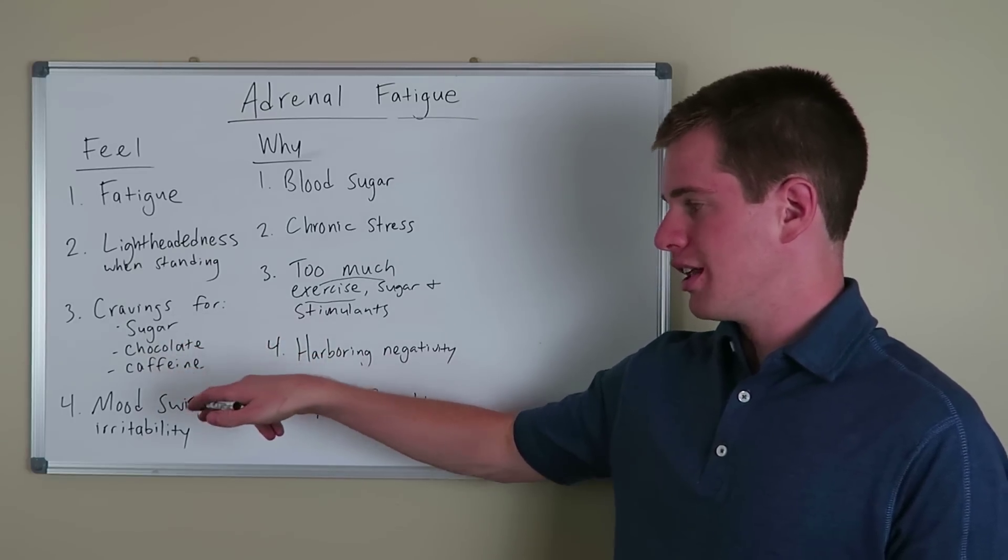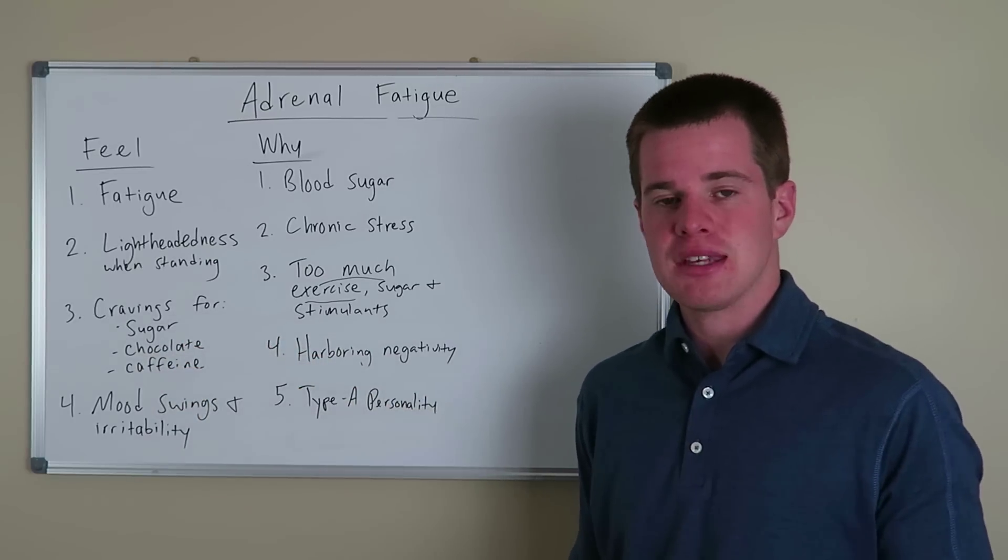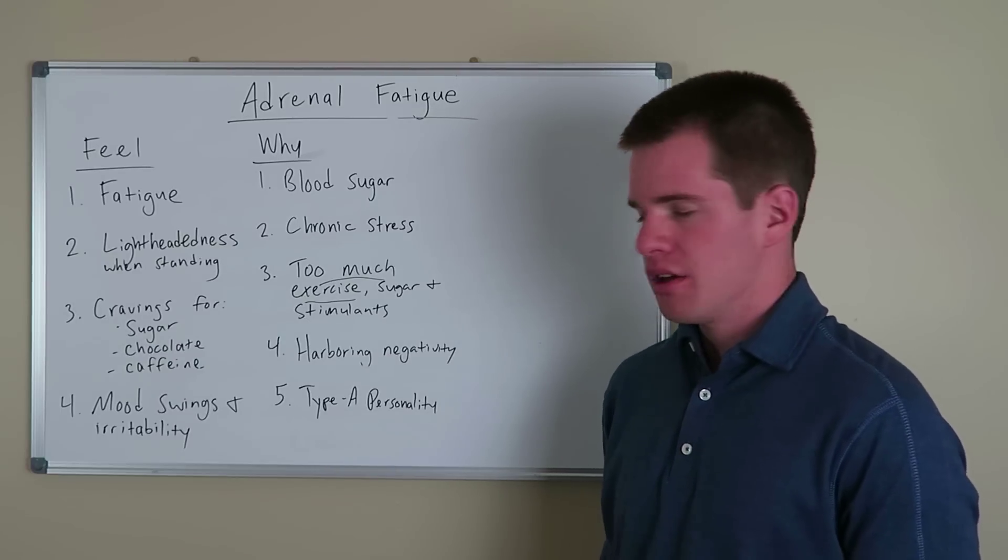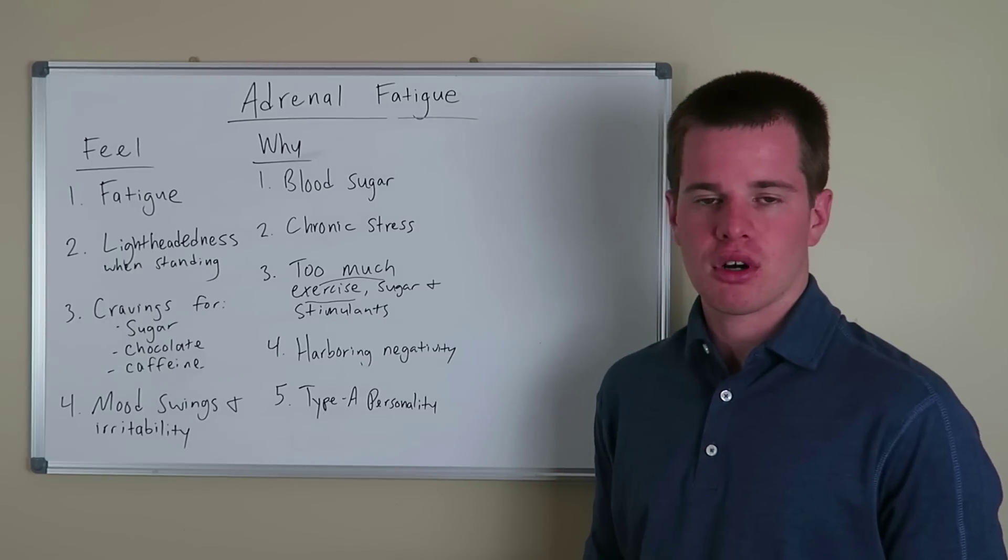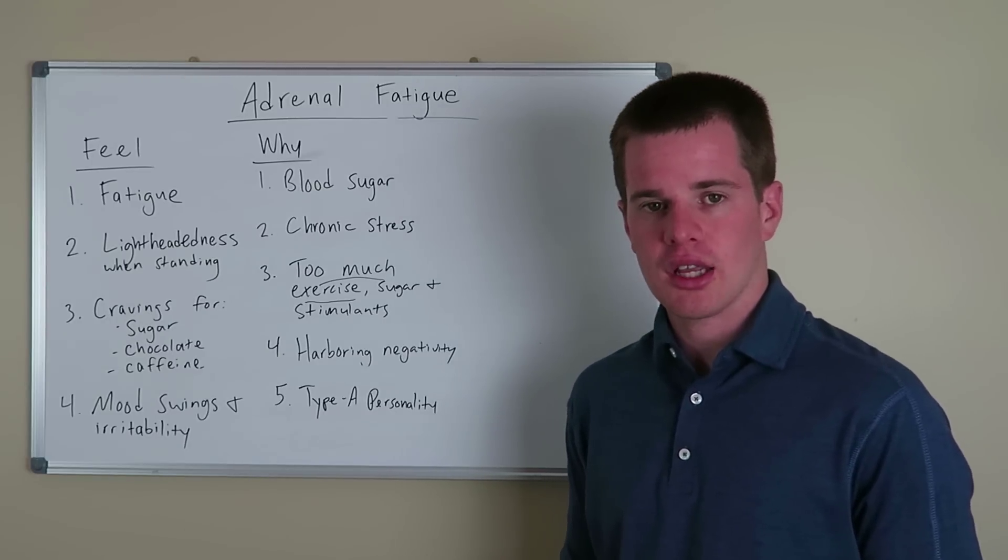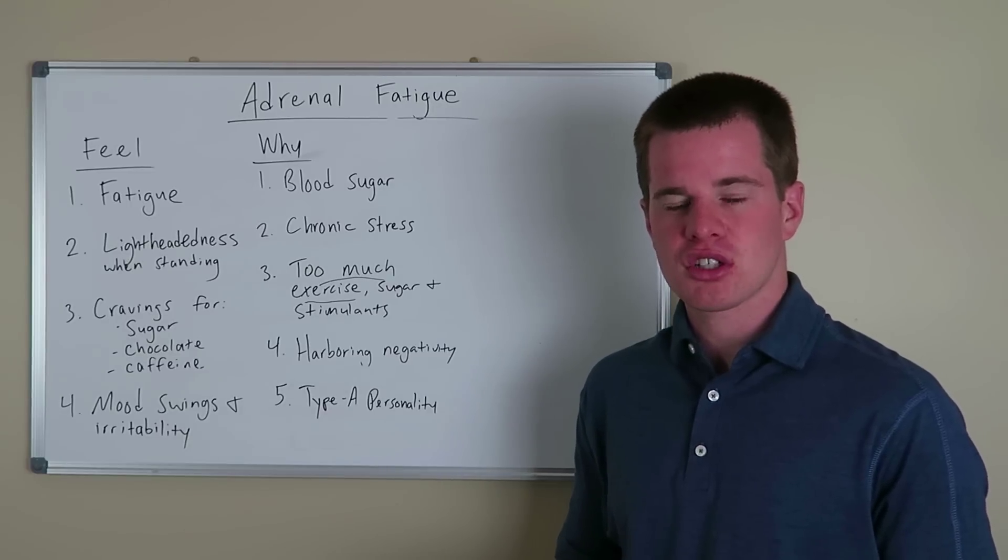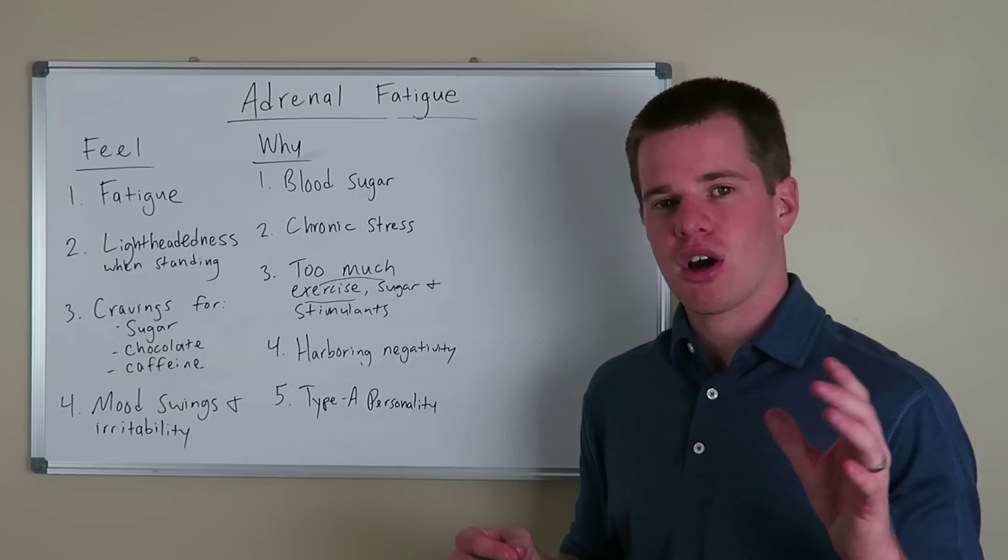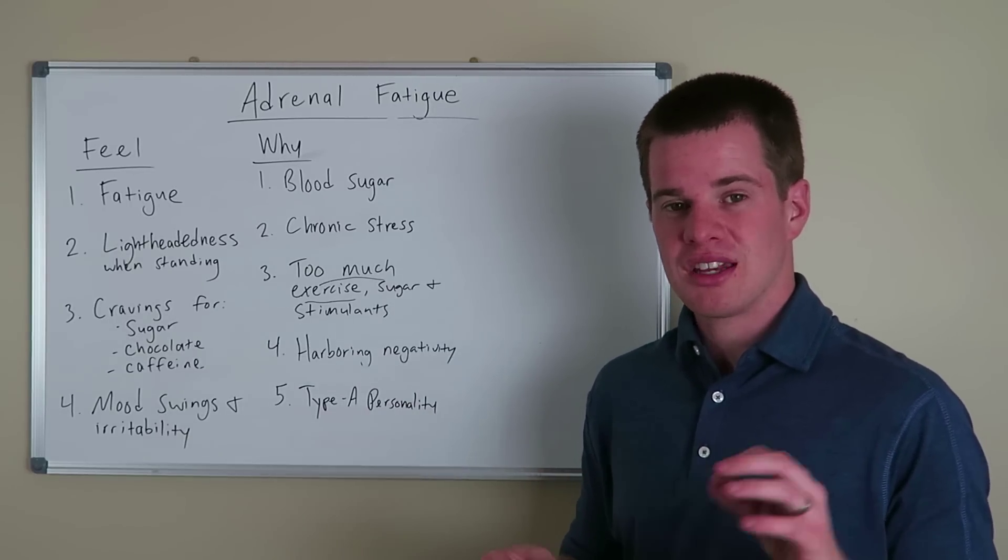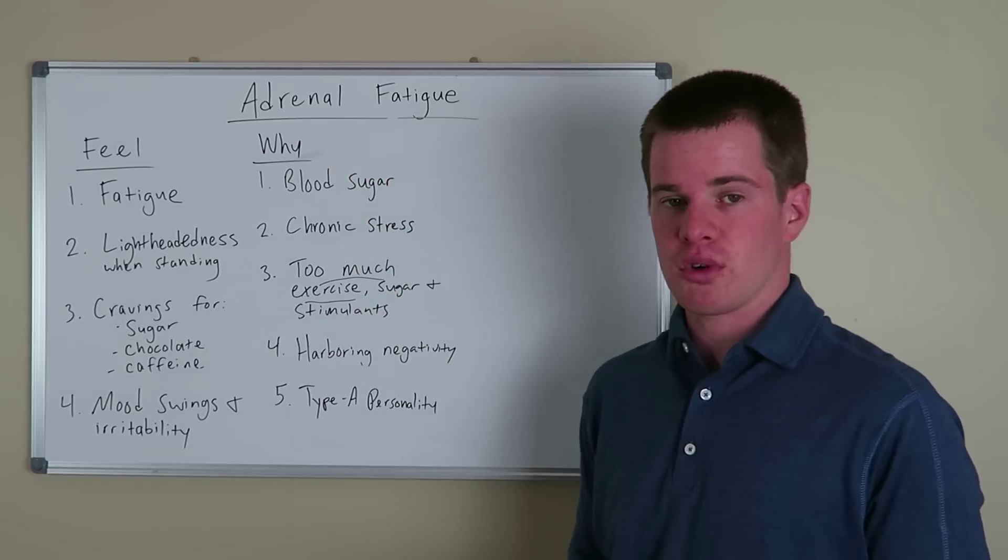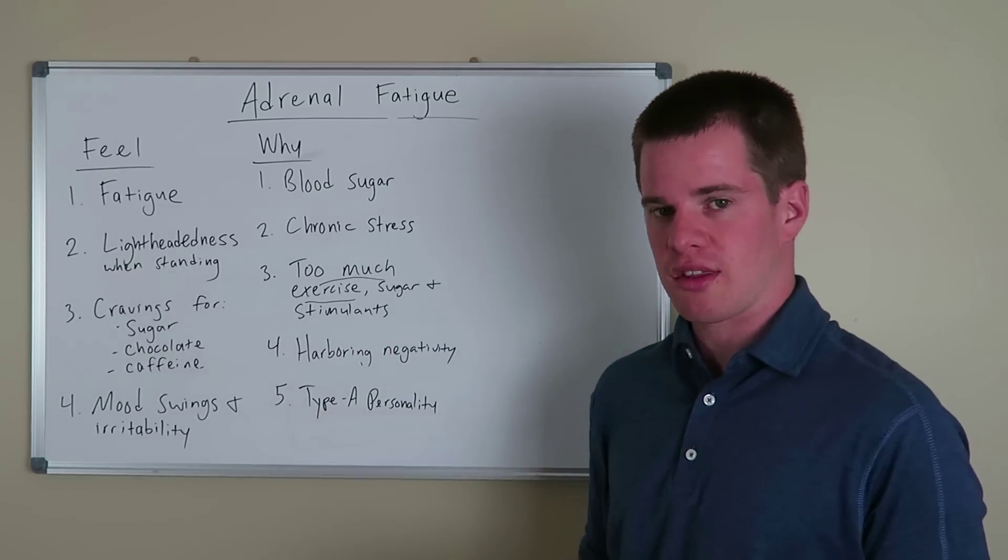So number three, cravings for sugar, chocolate, caffeine. So you have that midday slump where cortisol and your blood sugar are both likely crashing. You're going to want to go for that candy bar. You're going to want to go for that dark chocolate and get that little boost of theobromine and naturally occurring caffeine in the dark chocolate, especially the high cacao content. It's going to be a little bit more potent. Definitely better for your health, but it definitely is a symptom that you have some adrenal issues going on if you're always resorting to that.